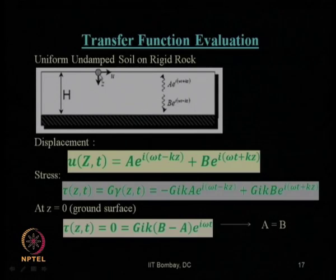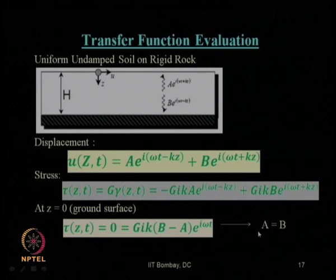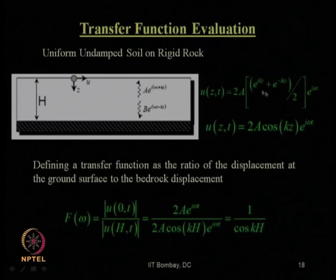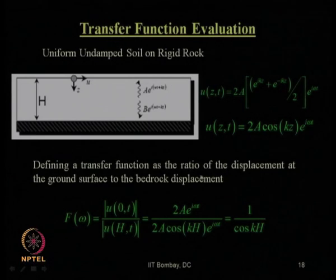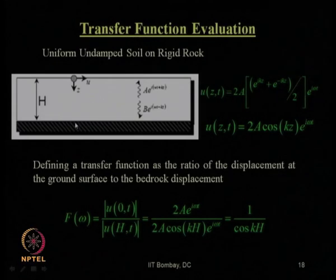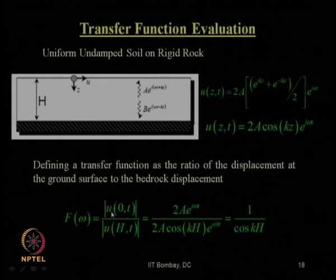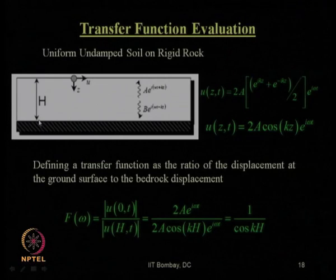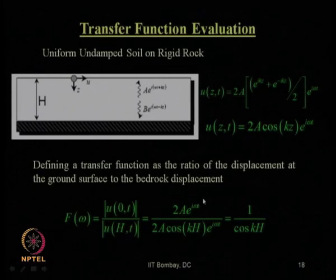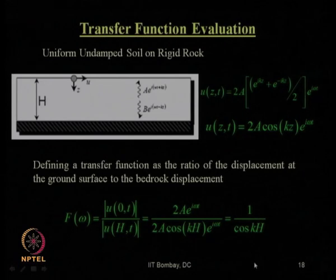Using boundary condition one — at the ground surface, stress should be zero — we got A equals B. With A equal to B, the equation simplifies, and the transfer function is defined as the ratio of displacement at the ground surface to that at the bedrock level. This ratio simplifies to 1 divided by cosine(KH), where K is the wave number and H is the soil layer thickness.